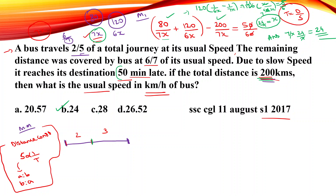In this method, the first part uses 2/5 of the distance and the second part uses 3/5 of the distance, both at different speeds. It is not the same speed for the full journey.